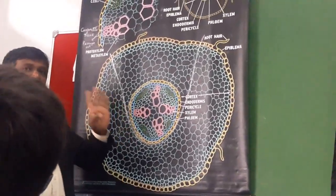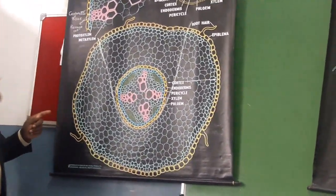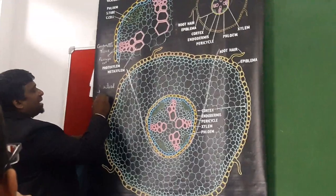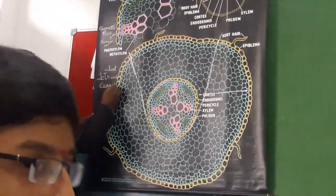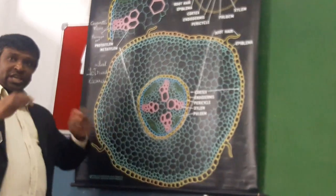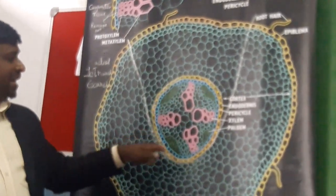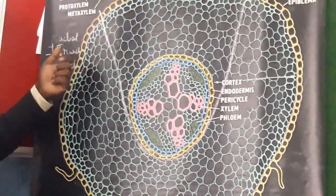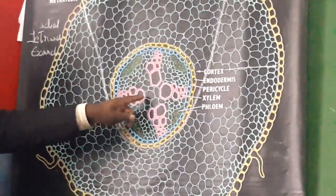Alternating with phloem is the xylem, and it continues. There are four patches of xylem and four patches of phloem — a tetrarch condition. The important things to remember: they are a radial vascular bundle, tetrarch condition, and exarch. The entire enclosure containing the vascular xylem and phloem is called the stele. The stele is radial, tetrarch in nature because of alternating patches of xylem and phloem, and exarch because proto-xylem is towards the endodermis and meta-xylem is towards the pith, which is small.